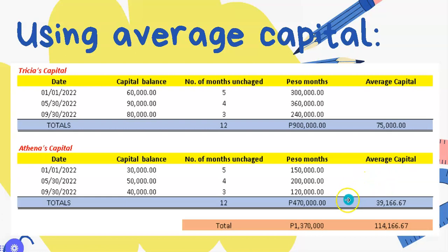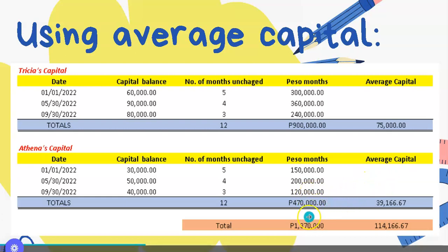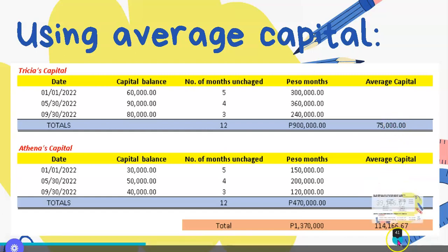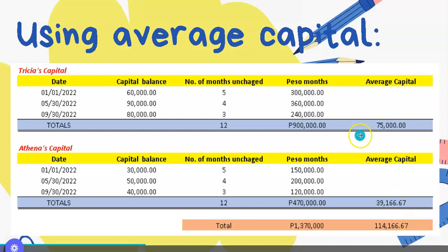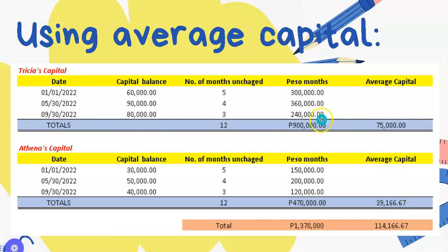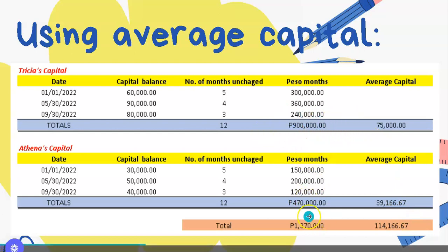For Athena, 470,000 divided by 12 equals 39,166.67. Adding both partners' average capitals together gives a total average capital of 114,166.67. On the previous video we used peso-months as the numerator.